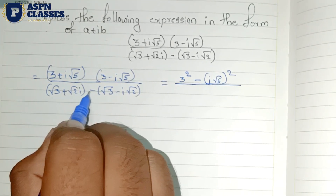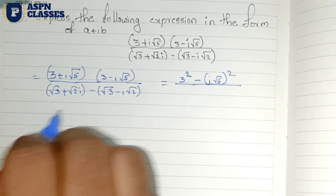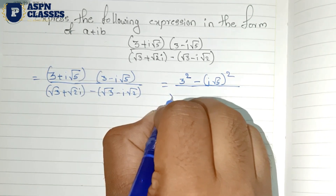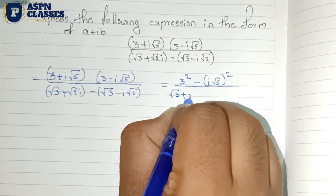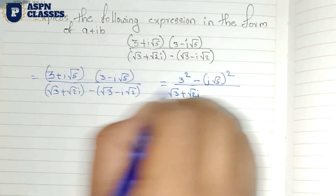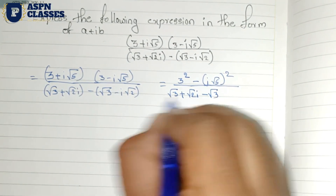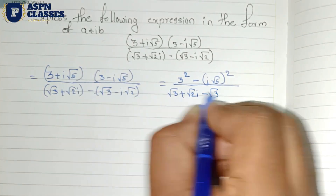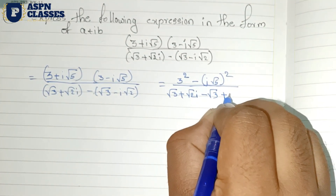Now we observe the denominator. In the denominator, there is minus i, so we will multiply by minus i.